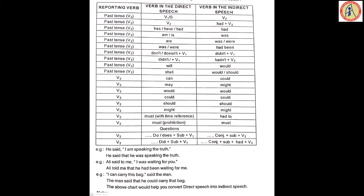Modal verbs: 'will' changes to 'would', 'shall' changes to 'would' or 'should', 'can' changes to 'could', 'may' changes to 'might'. Past forms like 'would', 'could', 'should', 'might' — there are no changes; repeat the same modal verbs. 'Must' — with a time reference, change to 'had to'; where it refers to prohibition, 'must' remains as 'must'.